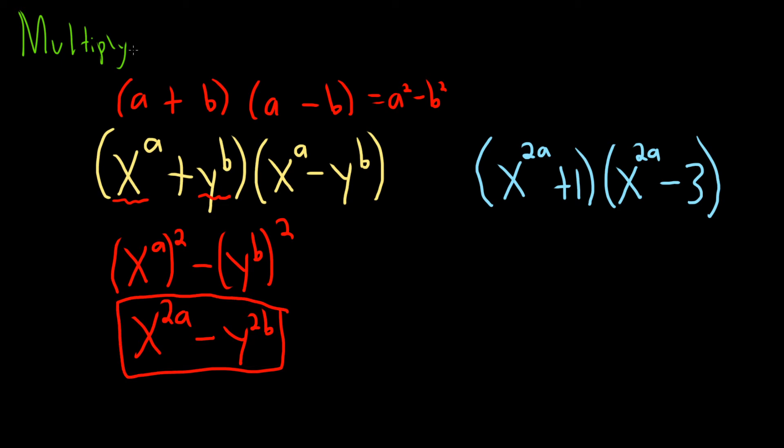If you're confused about the a and the b, I could use different letters. I can do like u plus v, u minus v, and that would be u squared minus v squared. So your u is x to the a and your v is y to the b. So it's u squared minus v squared, so everything works out.